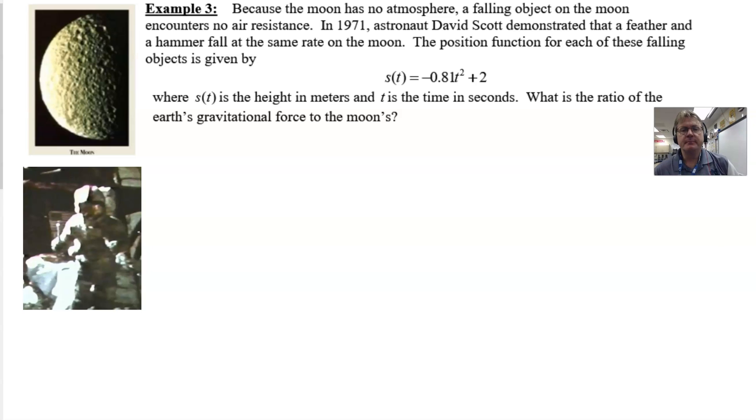So here we are with our example three. We'll read it together. It says, because the moon has no atmosphere, a falling object on the moon encounters no air resistance, or at least very little or negligible air resistance. Well back in 1971, astronaut commander David Scott demonstrated that a feather and a hammer would fall at the same rate on the moon. And this was a part of the Apollo 15 launch with our lunar excursion NASA plans.